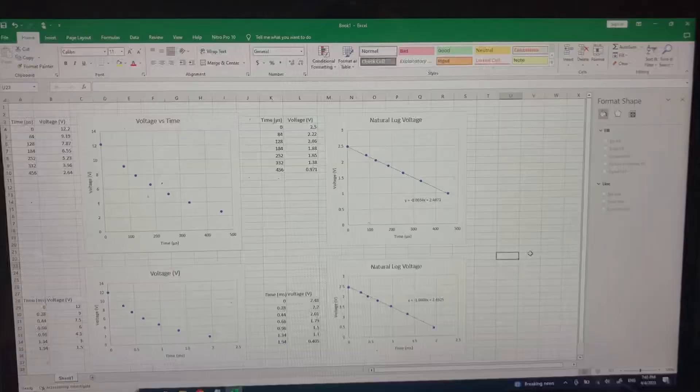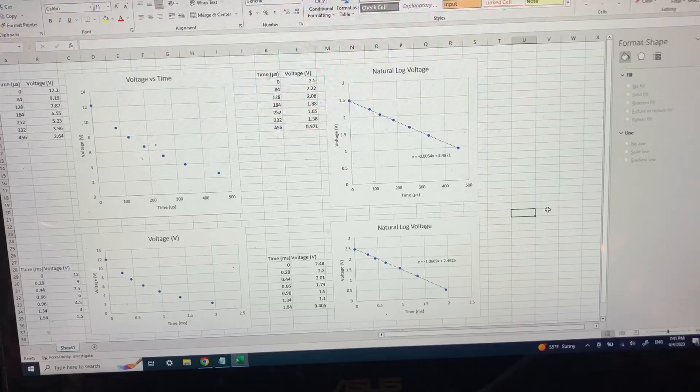The point of all this was to generate data points that were going to give us a curved line. We take the natural log of both sides of the voltage equation as a capacitor is being discharged. We're able to get this linear line based off of the natural log of our graph. Based off of that, we're able to calculate things like the time constant, and we could even calculate for an unknown capacitor.